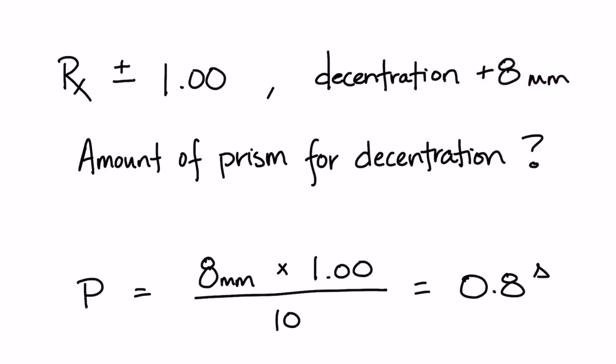Since we don't need the power sign in Prentiss rule, we'll talk about whether the lens is minus or plus power after we go through the calculations. We'll need that to determine the base direction. To calculate the prism amount needed to move the OC 8 millimeters to the decentration point on a one diopter lens, we'll need to use Prentiss rule. 8 times 1 divided by 10, and that gives us 0.8 diopters of prism.